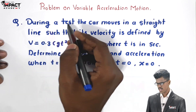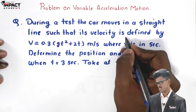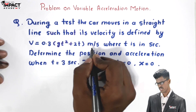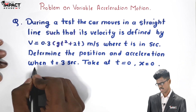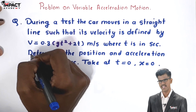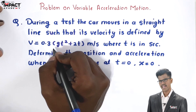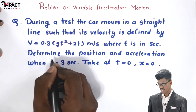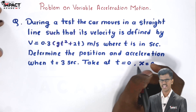Here is the problem. During a test, the car moves in a straight line such that its velocity is defined by v = 0.3(9t² + 2t) meters per second, where t is in seconds. Determine the position and acceleration when t = 3 seconds. At t = 0, x = 0.